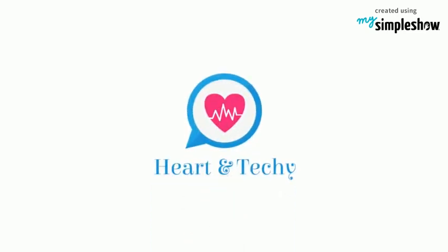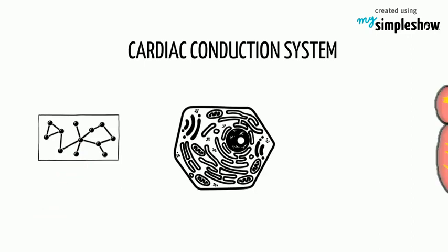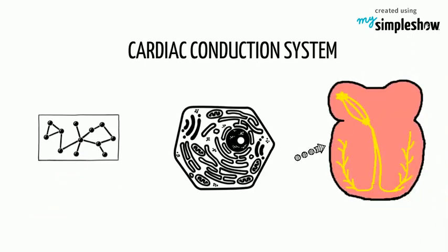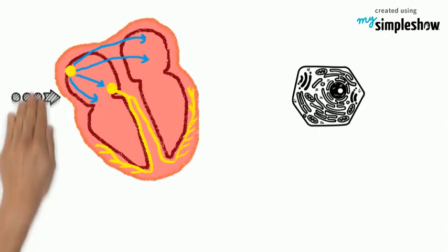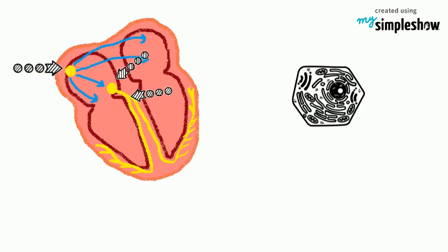Welcome to Heart and Techie. What is meant by the cardiac conduction system? A network of specialized muscle cells is found in the heart's walls. These muscle cells send signals to the rest of the heart muscle, causing a contraction. This group of muscle cells is called the cardiac conduction system. These specialized cells are the SA node, AV node, bundle of His, and Purkinje fibers.